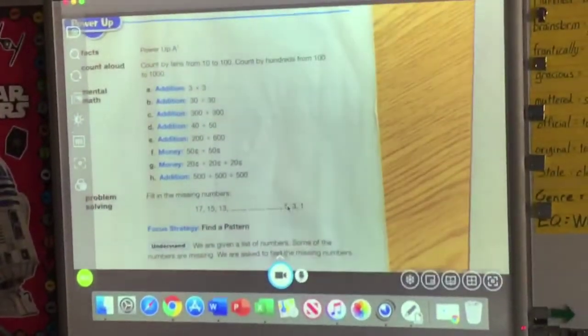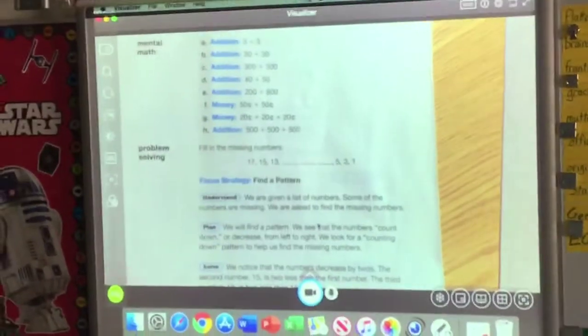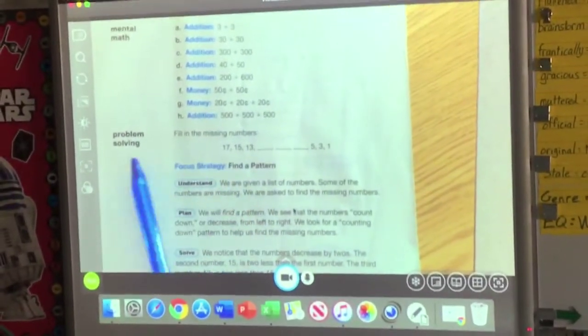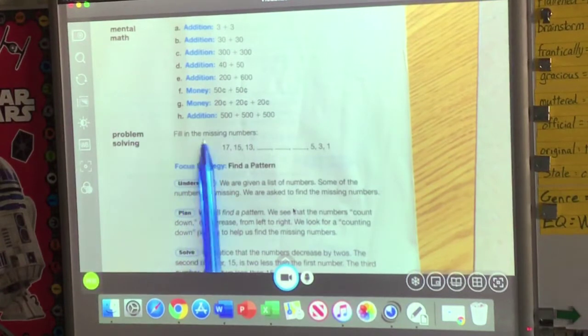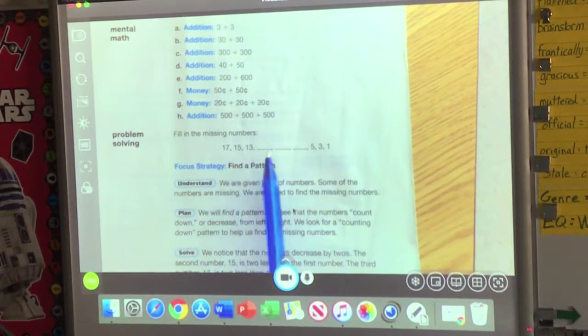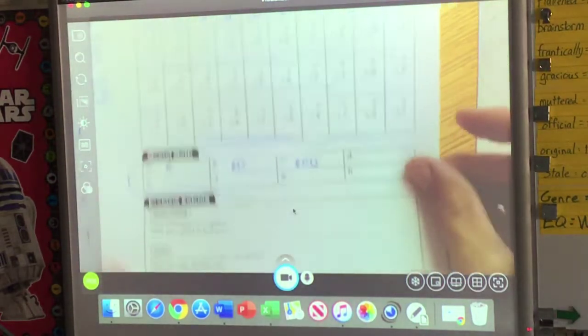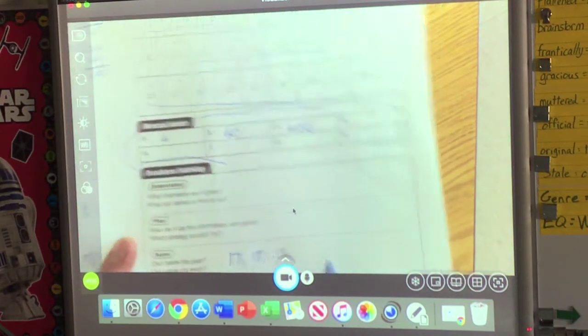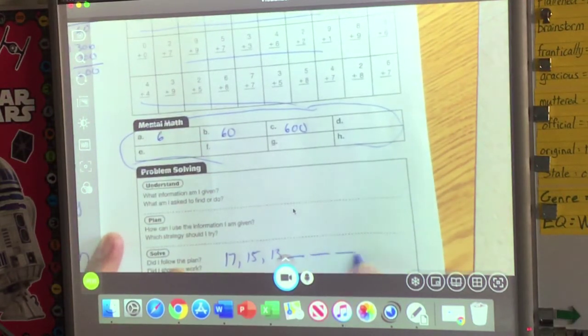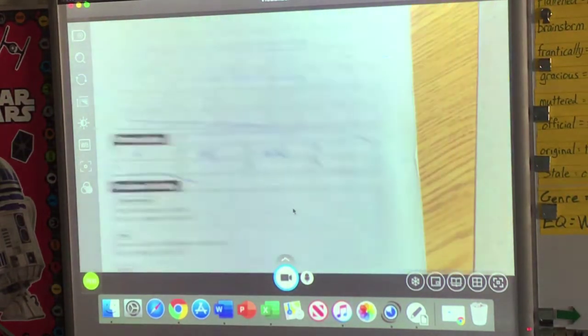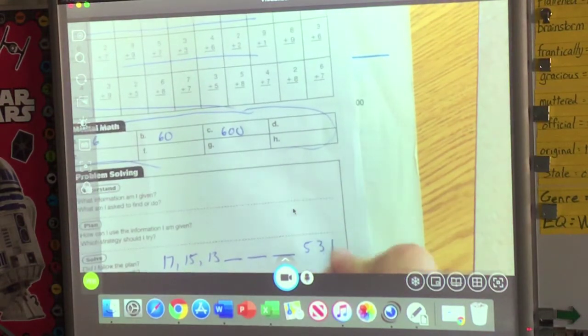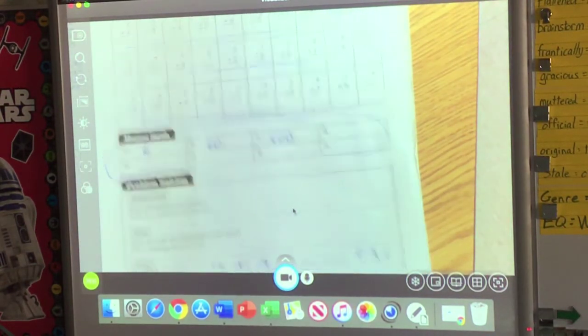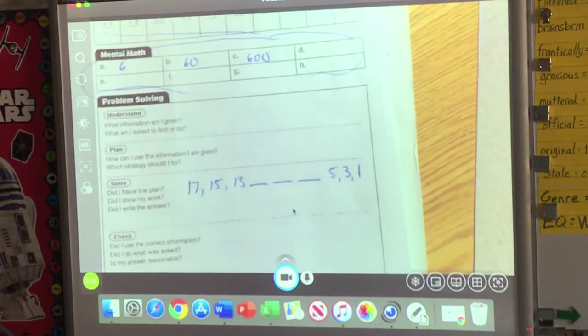All right. The last part of the video is we'll be doing the problem of the day. And the problem of the day is at the bottom. And it says, fill in the missing numbers. 17, 15, 13, blank, blank, blank, 5, 3, 1. So first of all, let's get it on my paper. 17, 15, 13. Here's where I'm looking for the answers. And then it ends with a 5, 3, 1.